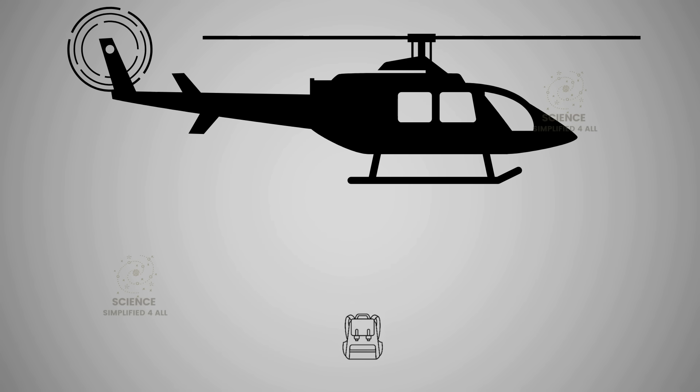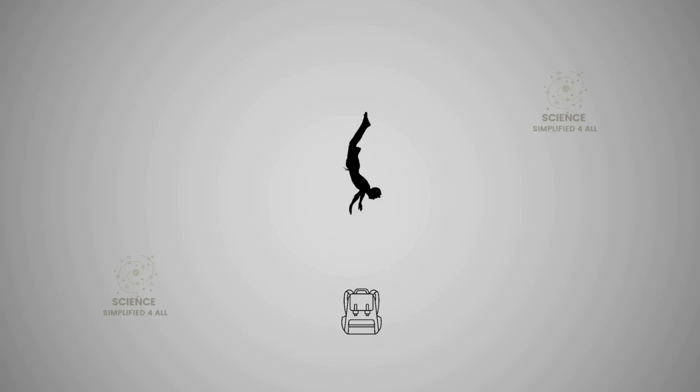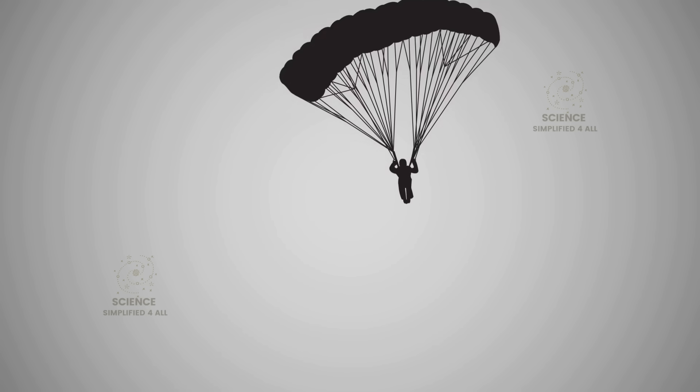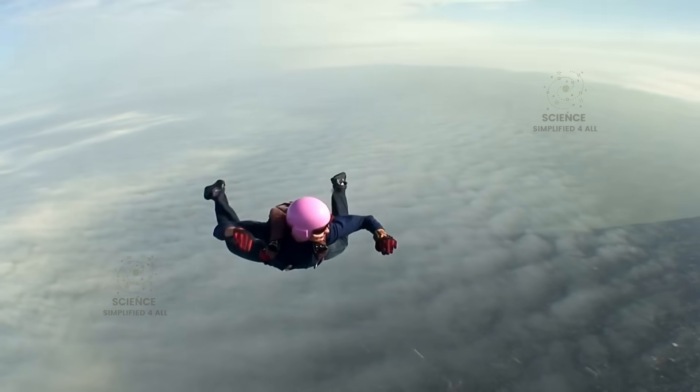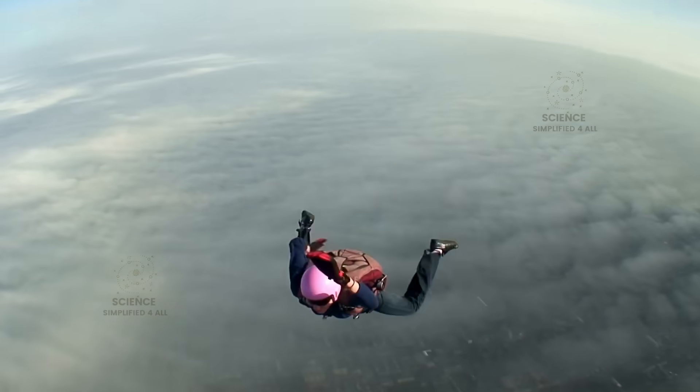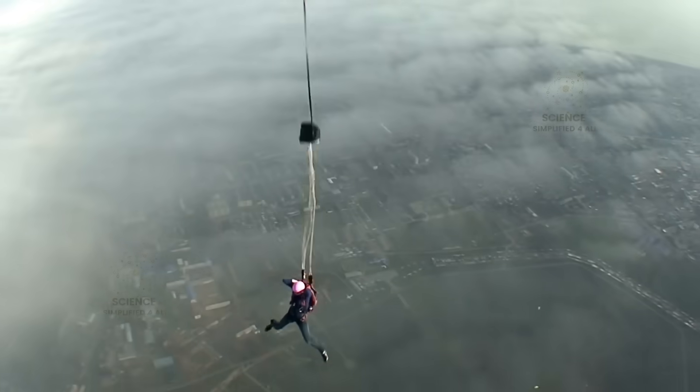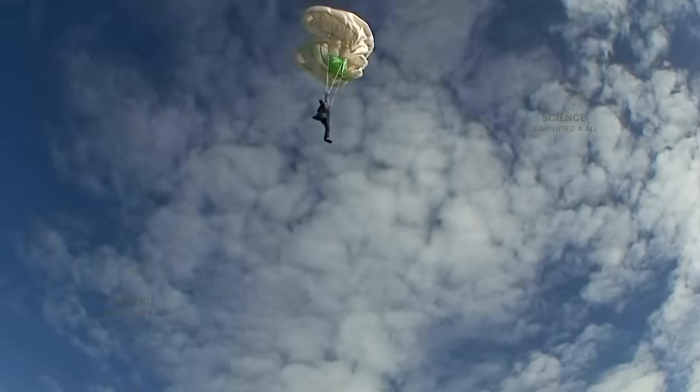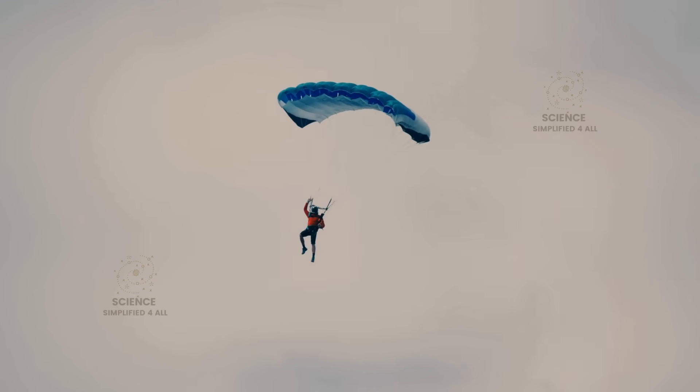This very idea is what makes those parachute rescue scenes in movies scientifically possible, where someone jumps after a falling parachute and catches up. When a skydiver opens their parachute while falling at 200 km per hour, what really happens is a massive drop in terminal velocity. The parachute increases the surface area, increasing air resistance dramatically. As a result, the skydiver's terminal velocity becomes much lower, allowing them to land safely.